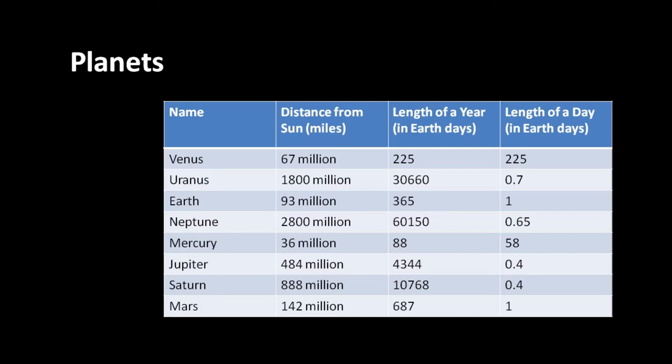Each tuple in this relation, each row in this table, represents one planet as described by these four attributes. A key thing to understand about the relational model is that the order among the tuples - among the rows - is not part of the data. As far as the relational model is concerned, the rows aren't in any order at all. They just happen to be written in a particular order because you have to show them somehow.